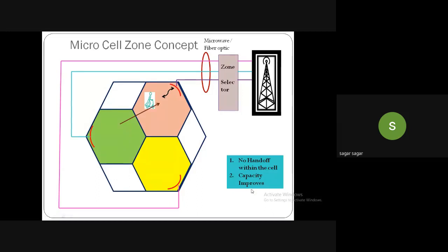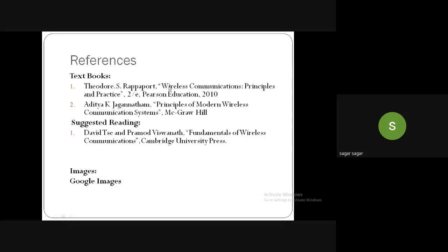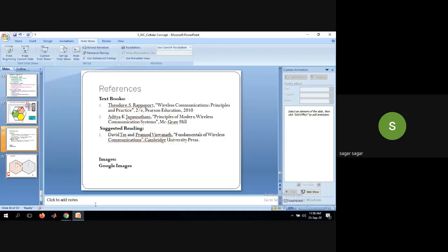The microcell zone concept combines the benefits of cell splitting and cell sectorization — improved capacity without increased handoffs. This completes the first chapter. Most of the problems and concepts are drawn from Rappaport's Wireless Communications textbook, which you should go through for further study.